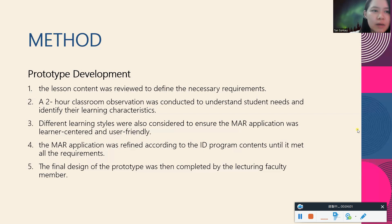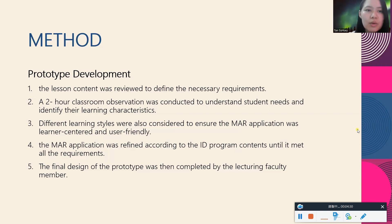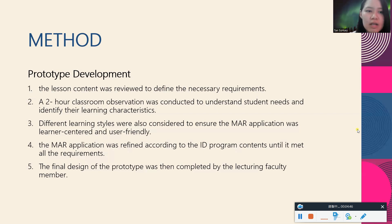For the methods, the first part is prototype development, which involved five steps. First, the lesson content was reviewed to define the necessary requirements. Then, a two-hour classroom observation was conducted to understand students' needs and identify their learning characteristics. Different learning styles were considered to ensure the application was learner-centered and user-friendly. The MAR application was refined according to the industrial design program contents until it met all requirements, and the final prototype design was completed by the lecturing faculty members.